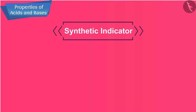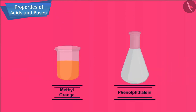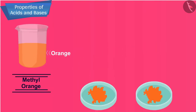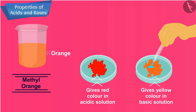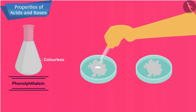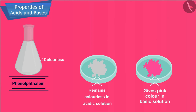You can also use synthetic indicators — indicators which are derived chemically, such as methyl orange and phenolphthalein, to test for acids and bases. The colour of methyl orange in a neutral solution is orange; it gives red colour in acidic solution and yellow colour in basic solution. The colour of phenolphthalein in a neutral solution is colourless; it remains colourless in acidic solution and gives a pink colour in a basic solution.